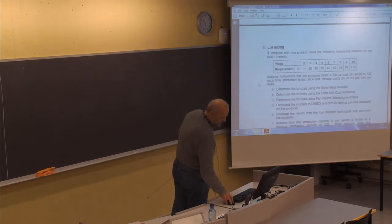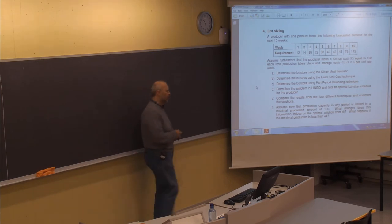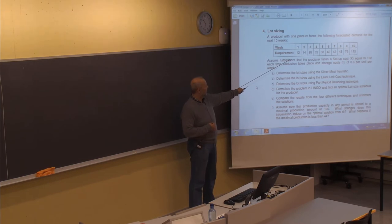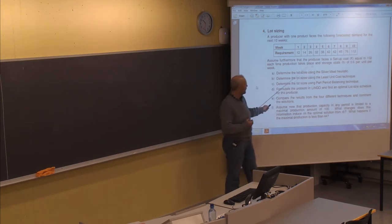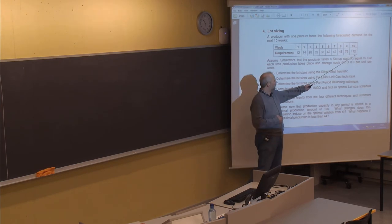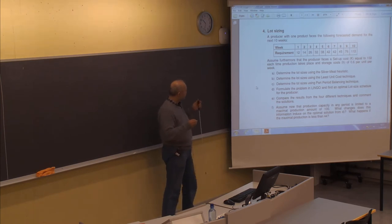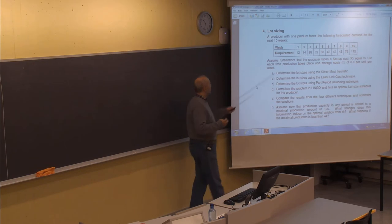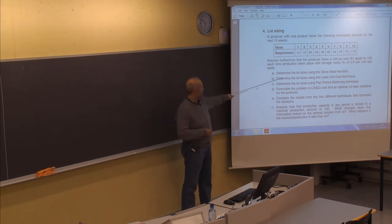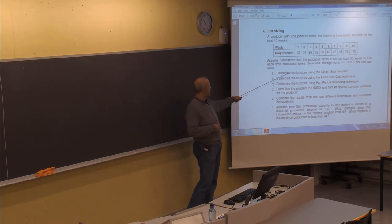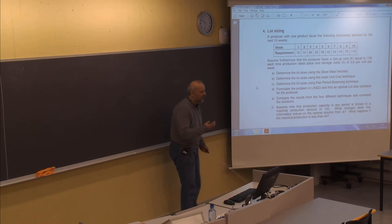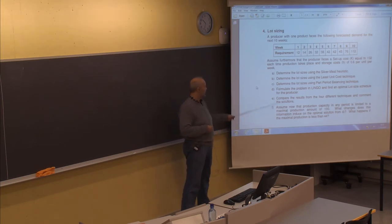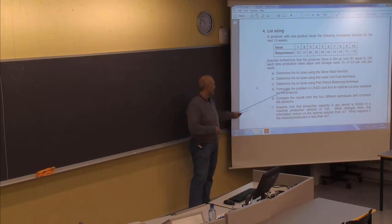Problem four is about lot sizing, described in chapter seven of the textbook, which I will present in two weeks. You are given exact demand but different amounts in 10 coming weeks, with variation from 12 up to 112 units. We look at different heuristics: the Silver Meal method, the Least Unit Cost, and Part Period Balancing. This problem can also be solved to optimality using a solver like LINGO with a linear programming formulation.